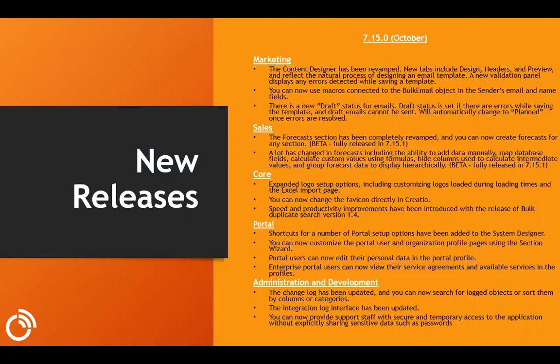The sales forecast section was revamped — it was in beta for 7.15.0 but became standard in 7.15.1 — allowing you to add data manually and map database fields to create your own forecasts. In core, there were changes around logo setup and the ability to change your favicon, speed and productivity improvements, and updates to the bulk duplicate search timing. There were additional portal changes with new setup options and profile pages. On the administrative side, the change log received updates with search and sort capabilities, updates to the integration log, and the ability to give people temporary access without sharing passwords.